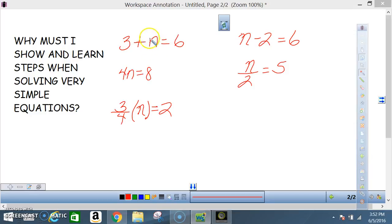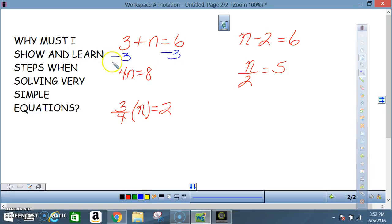Now the threes were cancelled out and I ended with 6 minus 3, so n is equal to 6 minus 3.